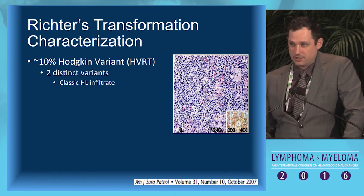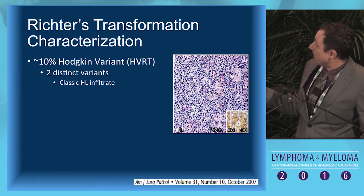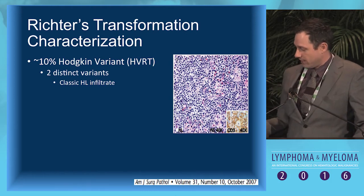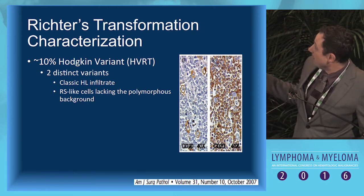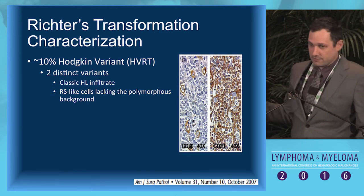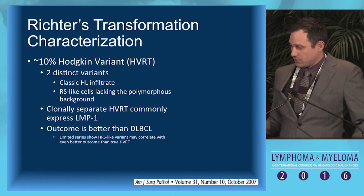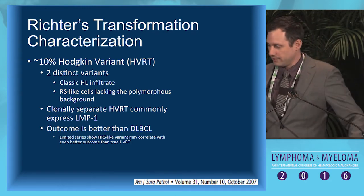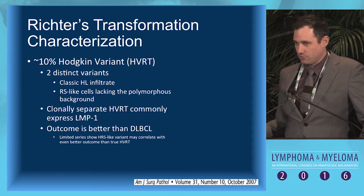One is classical Hodgkin lymphoma, where you have Reed-Sternberg cells admixed with a polymorphous background of CD3 T-cell and histiocytic infiltrate. The other has a Reed-Sternberg-like cell admixed around a CLL background of CD20, without this polymorphous background. Overall, they both respond similarly, but the Reed-Sternberg-like variants may actually have a better outcome than the true Hodgkin lymphoma variant.